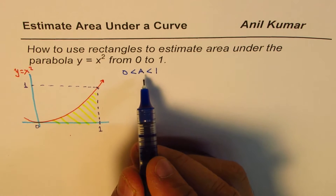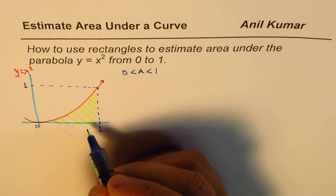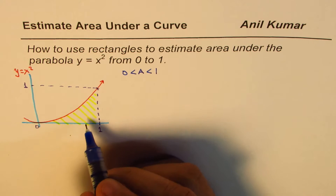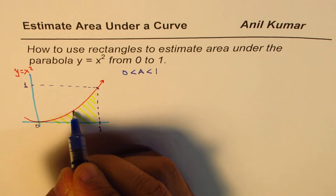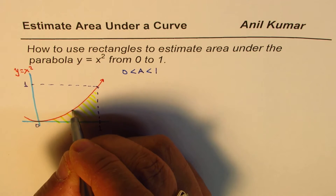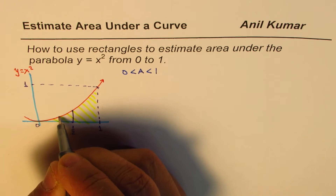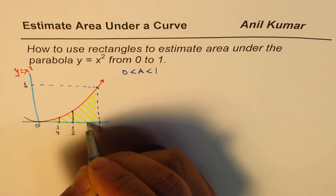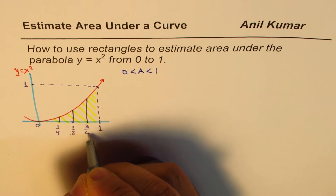Now we can do a better job than this. What we can do is divide this area into a number of small rectangles and then estimate. Let me divide this into four pieces. So we divide into four equal parts: this is at one-half, then one-fourth, and then three-fourths. What we have done now is divided into four rectangles.